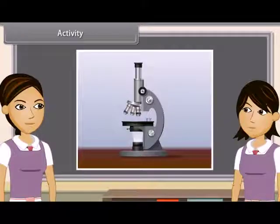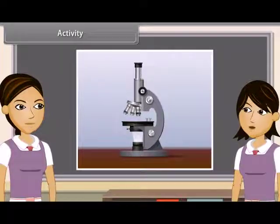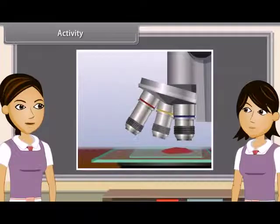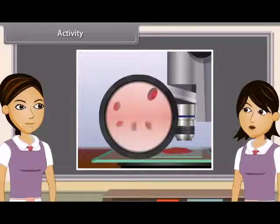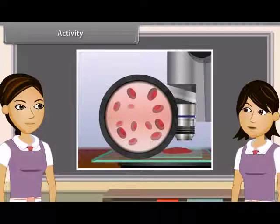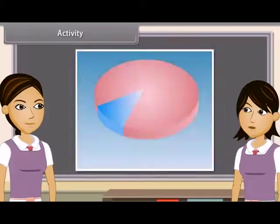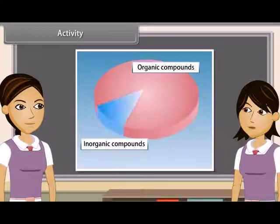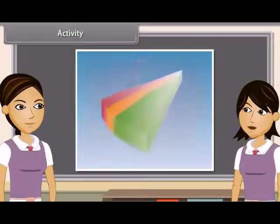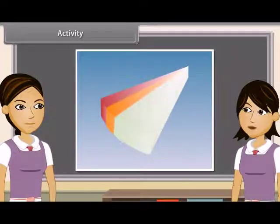Activity: Let us do an activity to find out the different types of blood cells. A drop of blood is taken on a slide and observed under the microscope. We can see red blood corpuscles or erythrocytes, white blood cells or leukocytes, and platelets. Plasma forms 55% of the total volume of blood and is a complex fluid containing inorganic salts and organic compounds.